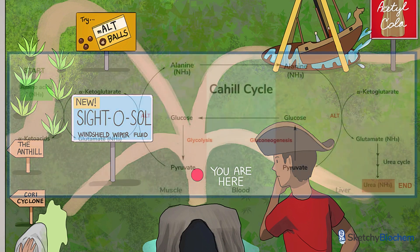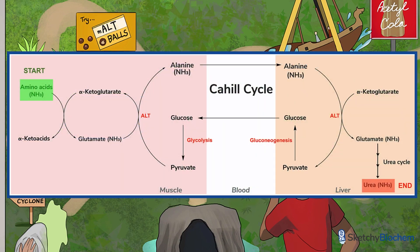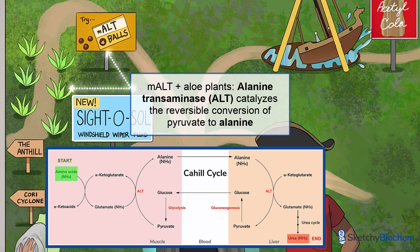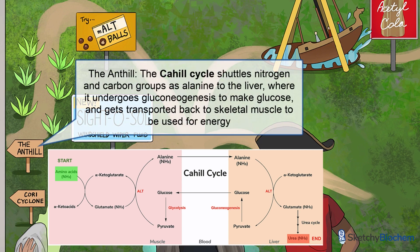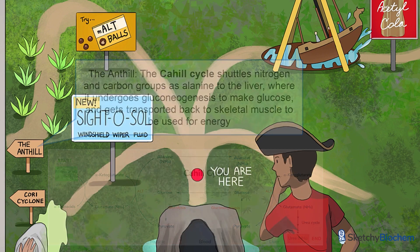Pyruvate can also be directly converted to alanine — we drew aloe plants to show alanine. Alanine transaminase, or ALT, catalyzes this reversible reaction with the help of vitamin B6. These malt balls, specifically the last three letters of 'malt,' will remind you of ALT. ALT is present in skeletal muscle and the liver. It participates in the Cahill cycle, or as we like to call it, the anthill. The Cahill cycle shuttles nitrogen and carbon groups derived from the breakdown of amino acids in skeletal muscle, as alanine, to the liver where it undergoes gluconeogenesis to produce glucose and gets transported back to skeletal muscle for energy. Meanwhile, the liver converts toxic ammonia to non-toxic urea. Don't forget to watch our Cori, Cahill, and urea cycle sketches to learn more.